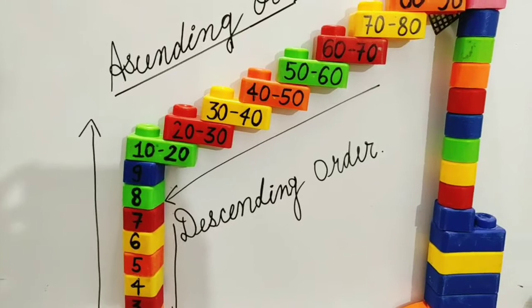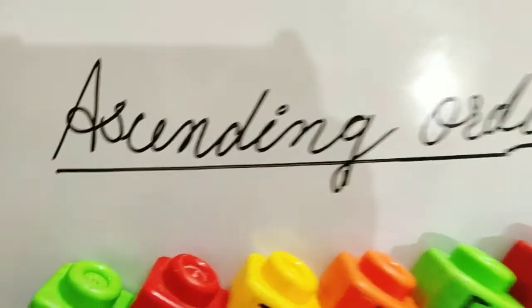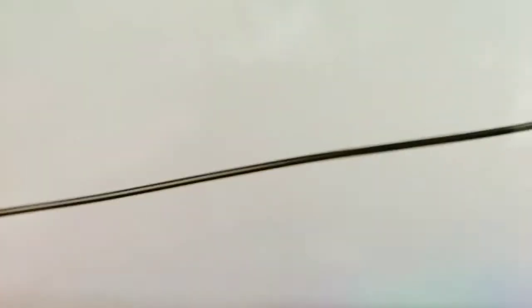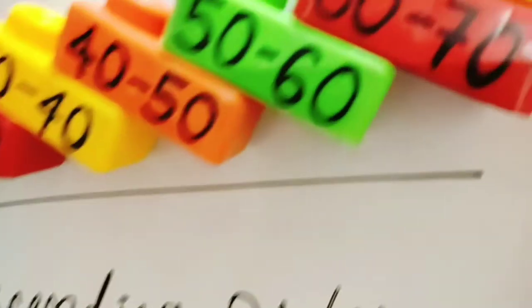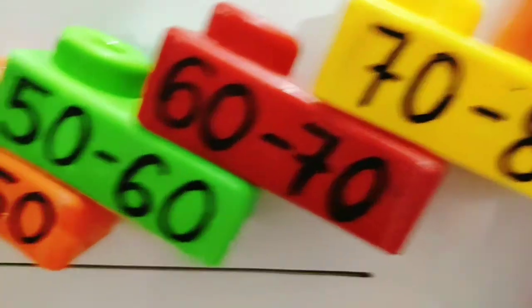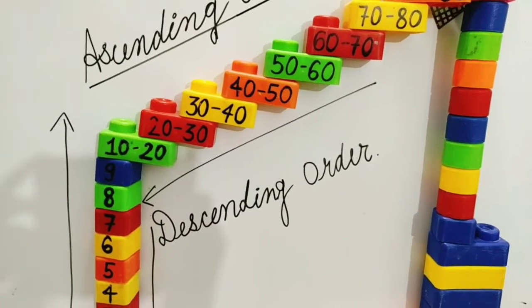Here is a presentation on ascending and descending order. In ascending order, the arrow always goes from low to high. And in descending order, the arrow goes from high to low. I hope you understood well ascending and descending order.